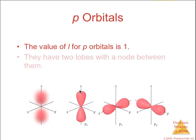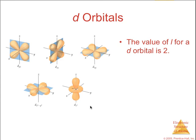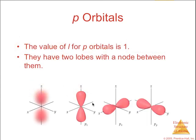For a p sublevel, the value of the angular momentum is 1. These p sublevels have two lobes with a node in between them. These are oriented along the x, y, and z axes. We typically draw them as a figure 8 or two peanuts in a peanut shell. In reality, the electron density probability looks like this.